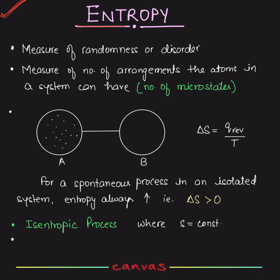Entropy basically — entropy is a property that measures randomness or disorder. Disorder is just opposite of order, right? There is so much chaos, so much randomness. It is a measure of randomness. It is not randomness itself.